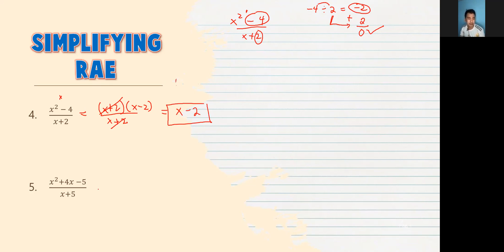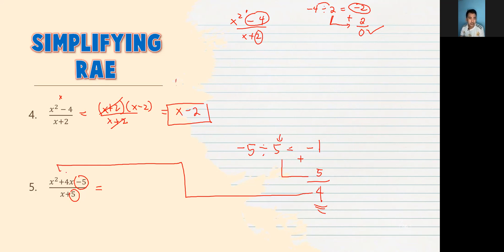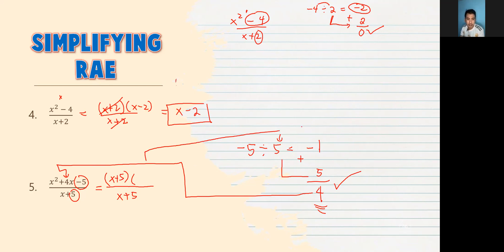Number 5: constant is negative 5 over positive 5. Negative 5 divided by 5 is negative 1. Add that to 5: negative 1 plus 5 is 4. Kung mapapansin nyo, yung 4 ay equal sa linear term. Equal, so check — factorable. May x plus 5 sa taas, makakacancel sa x plus 5 sa baba. Ang isa pang factor: x minus 1 (from negative 1). Cancel out — the remaining expression is x minus 1. That's the final answer. That's how you simplify RAE.